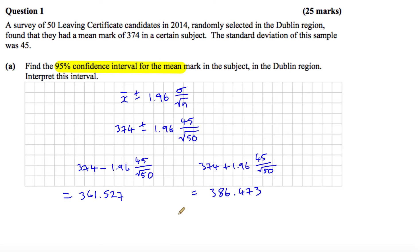So we know that our population mean, which we can call mu, we know that that lies between 361.527 and the upper limit of 386.473. We know that this value for the population mean lies in this region 95% of the time.